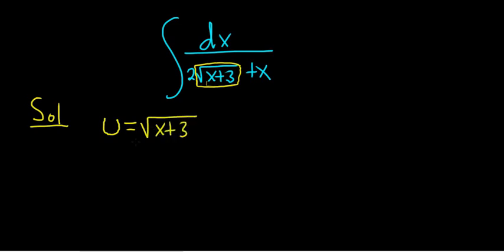Now normally we find du. However, there's a square root here, so it might be easier if we square both sides first. So let's square the left-hand side. That'll give us u squared. And when you square the square root, it will go away. So we get x plus 3.